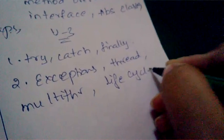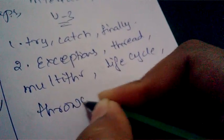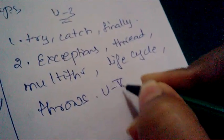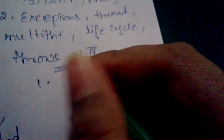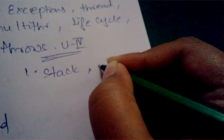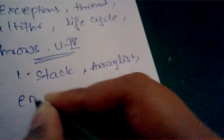Also in Unit Three: what is a thread, what is the multi-threading concept, what is the life cycle of a thread, and why do we use the throws keyword. Coming to Unit Four, important questions are: what is a stack with example, and what is ArrayList with example.